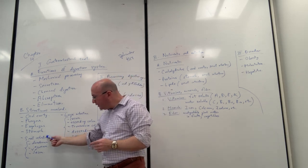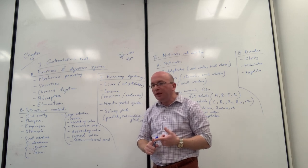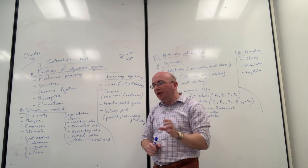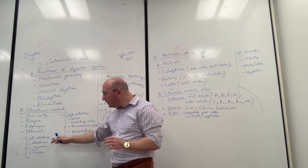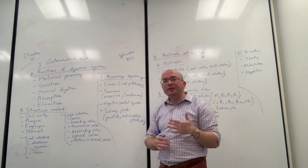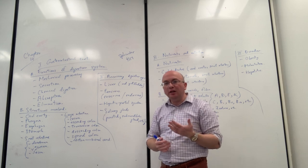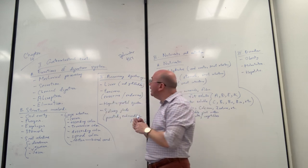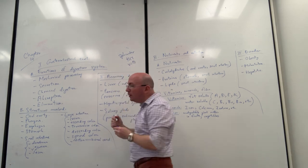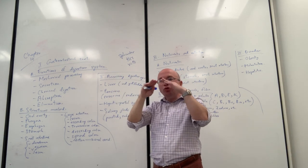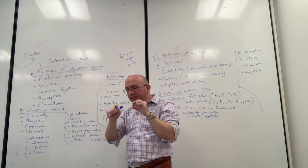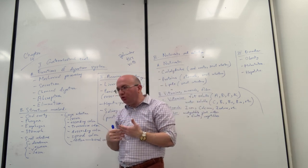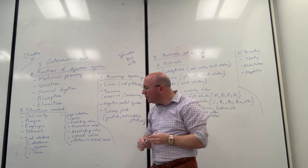For the small intestine, the duodenum is the essential first portion where enzymes and bile come in to start breaking down the food. As food continues through the jejunum and ileum, there are significant increases in surface area through folds, villi, and microvilli — microscopic structures that dramatically increase surface area to speed up absorption of molecules into the bloodstream, ensuring nutrients reach your cells.